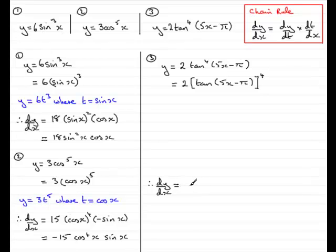So how do I see this? Well I see this as y equaling 2t⁴ where t is tan(5x - π).